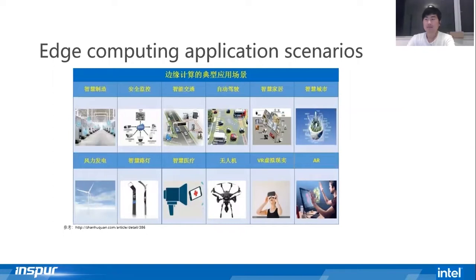Edge computing has been a hot topic in the past two years. Various white papers and research reports have defined it as close to the data-generating end. Let's analyze cloud computing and edge computing applications. In different scenarios, cloud computing is suitable for non-real-time, long-period data, and business with centralized decision-making scenarios, while edge computing handles real-time, short-period data, and local decision-making scenarios.